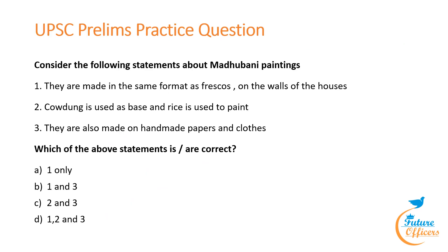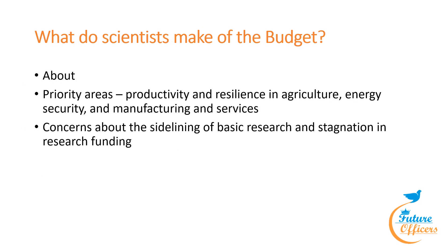A UPSC practice question: 'Consider the following statements about Madhubani paintings: they are made in the same format as frescoes on walls of houses; cowdung is used as a base and rice paste is used to paint; they are also made on handmade papers and clothes.' The answer is B — the first and third statements are correct.